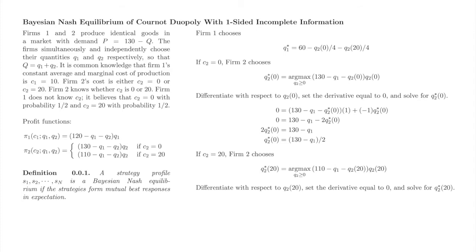Now, let's solve the problem for c2 equals 20, differentiate with respect to q2 of 20, and solve for q2 star of 20. We'll use the product rule here too. After some algebra, here's firm 2's best response when c2 equals 20.